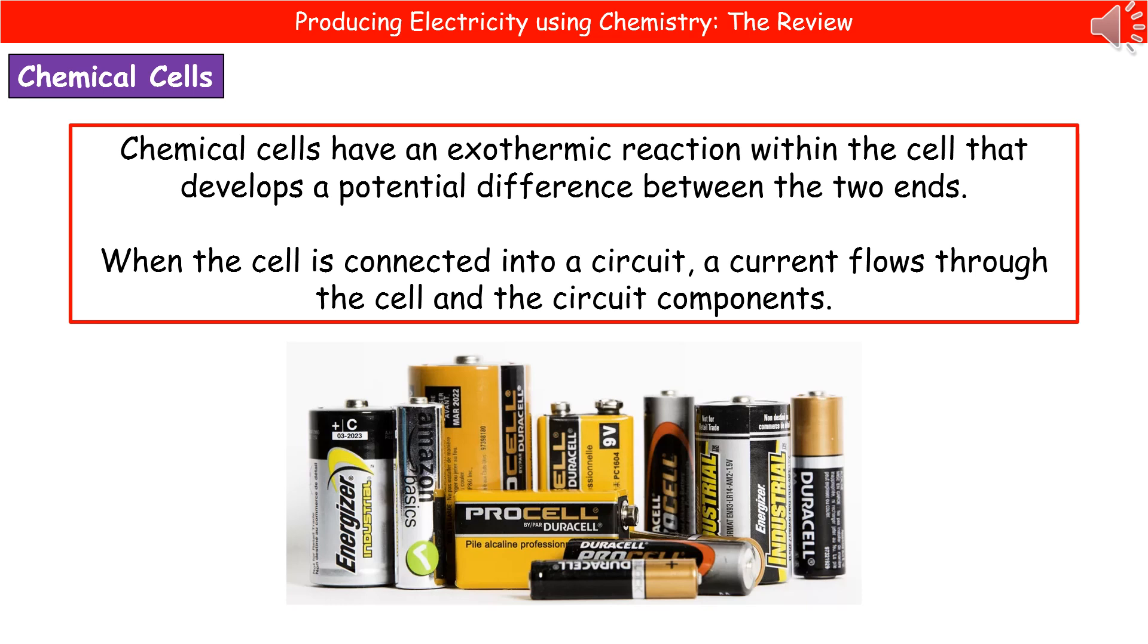Chemical cells have an exothermic reaction that occurs within the cell and as a result it will develop a potential difference between those two ends of the cell itself. So when the cell is connected into a circuit, a current will flow through the cell and the components of that circuit.